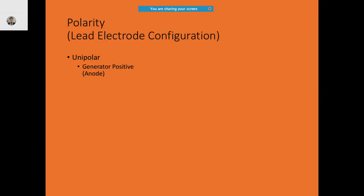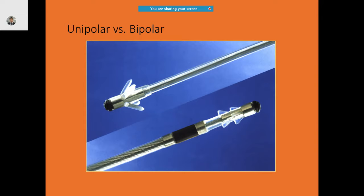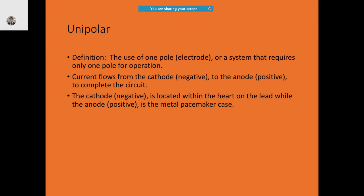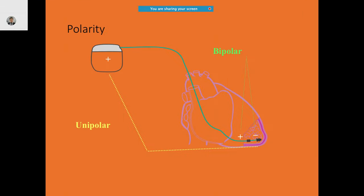Leads can be unipolar or bipolar. If it is bipolar, the lead ring is the anode, meaning it is positive, and the lead tip is the cathode, meaning it is negative. So the tip is negative and the ring is positive — that makes it bipolar. On a normal basis, the tip is always negative whether it is a unipolar or bipolar configuration.